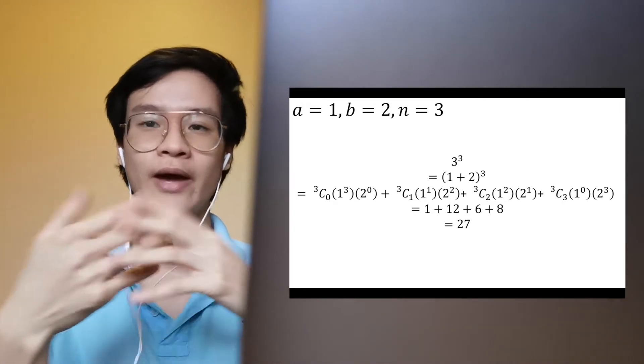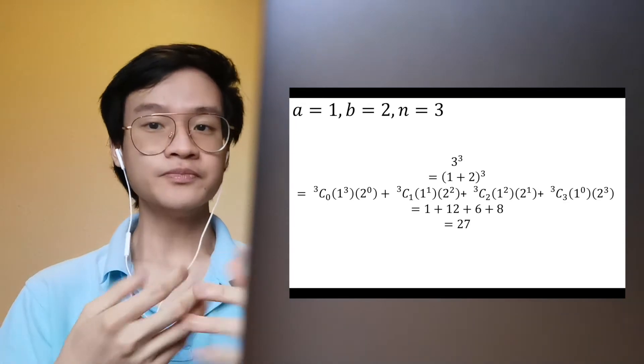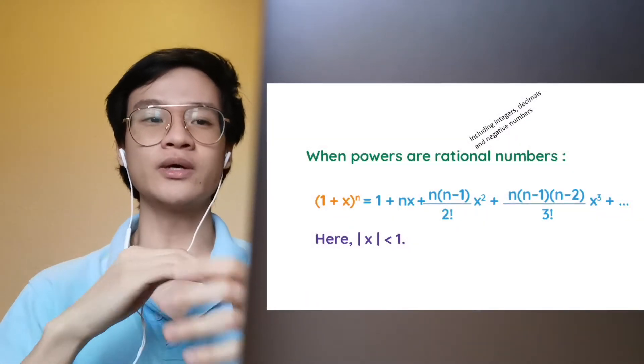However, if you include decimals and negative values of n, binomial expansion only allows you to approximate a value to a certain degree of accuracy.